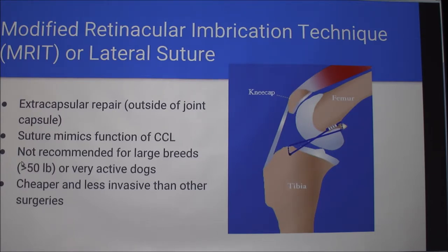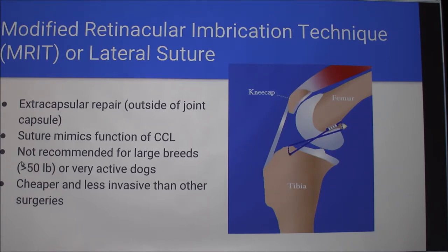Do you know what kind of suture that is? It's pretty strong. Some suture is absorbable, but there's monofilament nylon — we used to use it when we went back into multiple surgeries. I'm not sure if that's what it is, but that's my guess. I've heard people compare it to a really strong fishing line, but I don't know exactly.